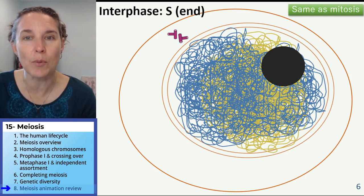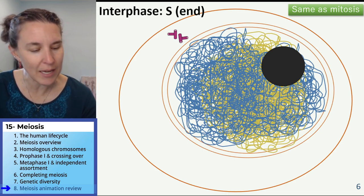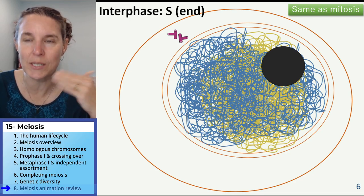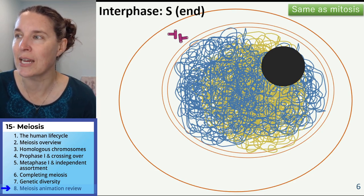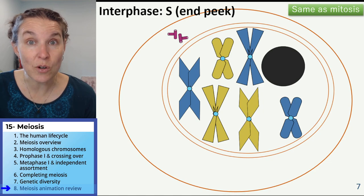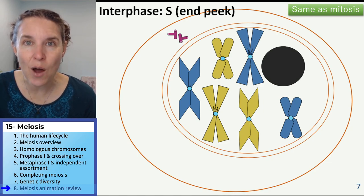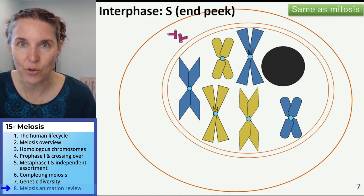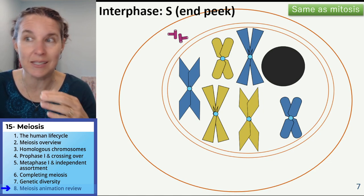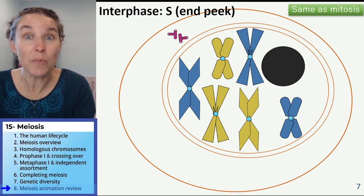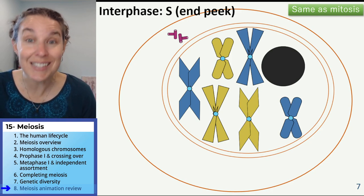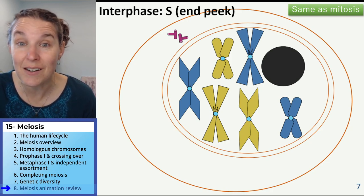At the end of S phase we've doubled our DNA, because in meiosis and mitosis it's the same — we double our DNA in S phase. We peaked at those chromosomes; now we have sister chromatids. This is the significant thing that happens in both meiosis and mitosis. Sister chromatids are identical.